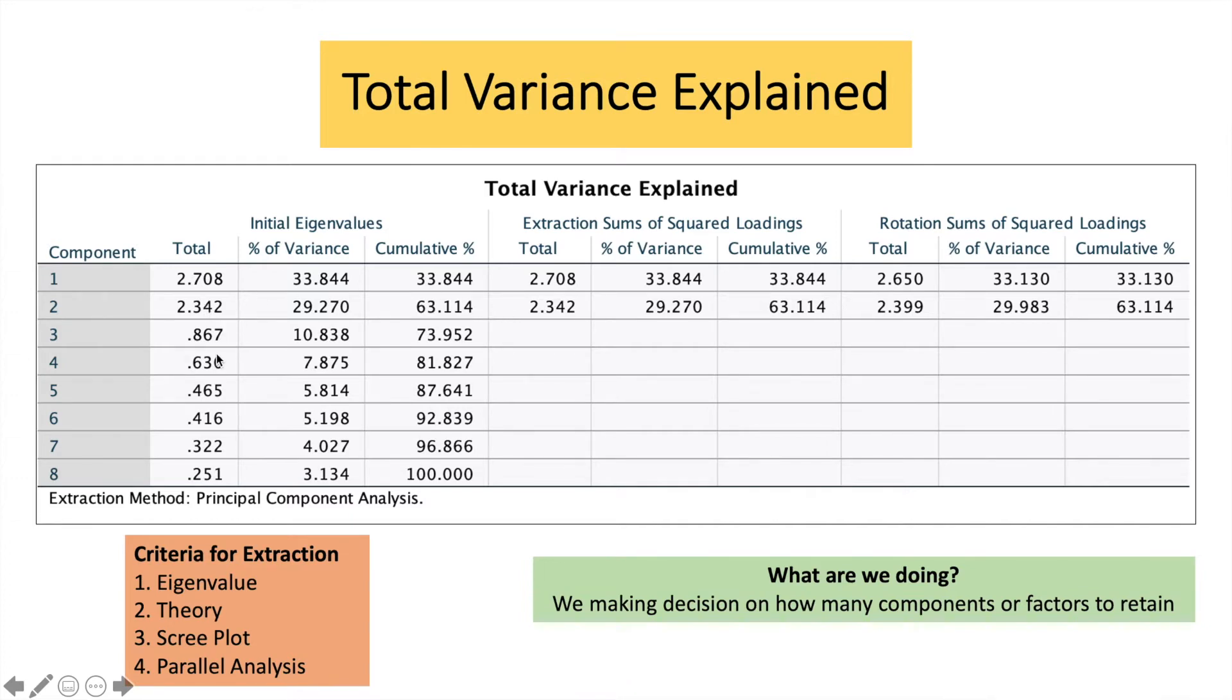Why? Because we set our eigenvalue just now in SPSS equal to one. So automatically, SPSS has already stopped over here. Why? Because the following components, the values are less than one.